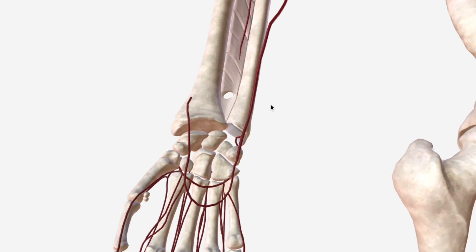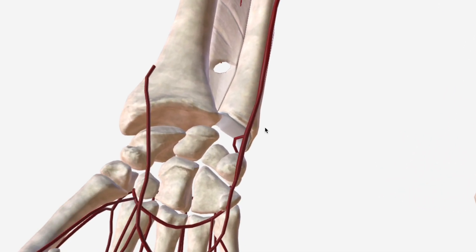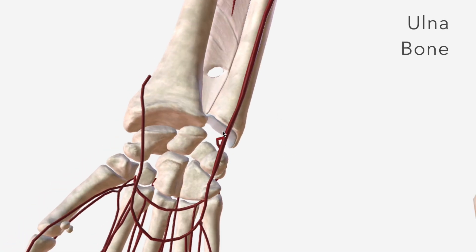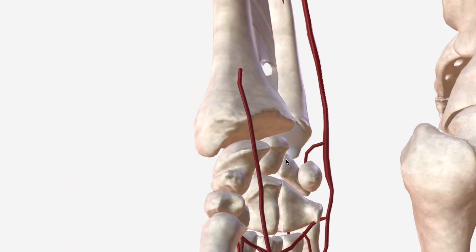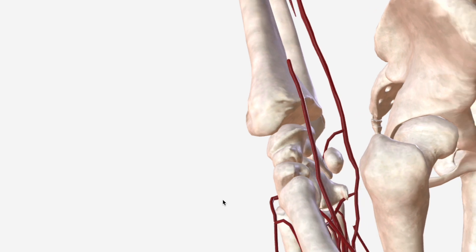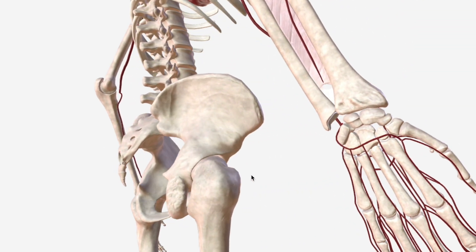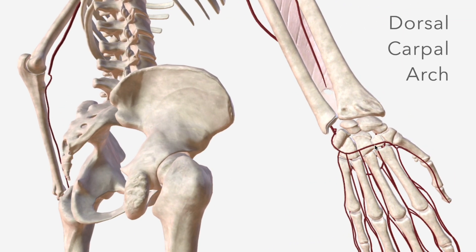Moving further down, we have the dorsal carpal branch, which emerges just distal to the ulnar bone and courses around the posterior aspect to contribute to the dorsal carpal arch.